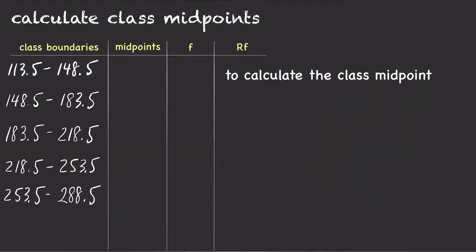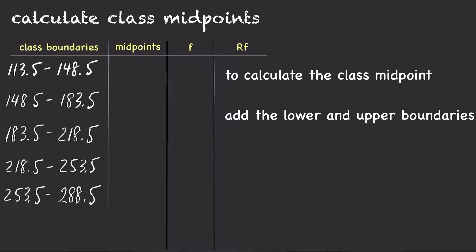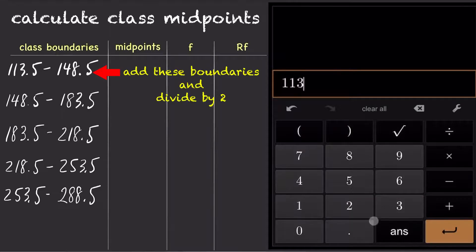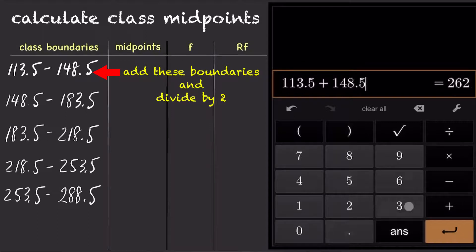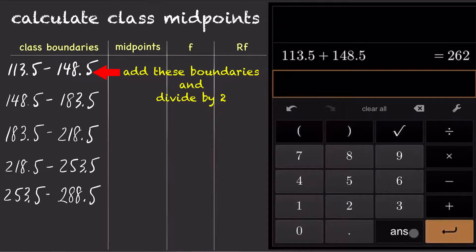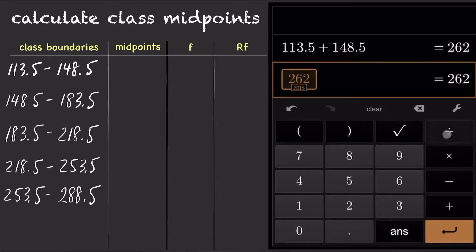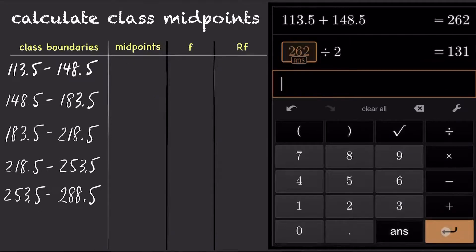To calculate a class midpoint, simply add up the lower boundary and the upper boundary and then divide the answer by 2. So for the first class, 113.5 plus 148.5 equals 262. Divide the answer by 2, so the first class midpoint is 131.